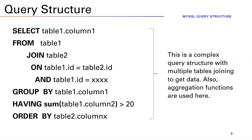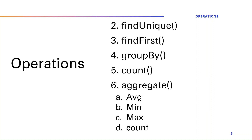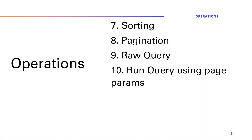We are going to see how to use Prisma to write the same sort of queries. The methods we are going to cover during this session are: findMany (with multiple options), findUnique, findFirst, groupBy, count, aggregate, sorting, pagination, and finally raw queries — if you have a query not supported by Prisma, you can write your own SQL statement.